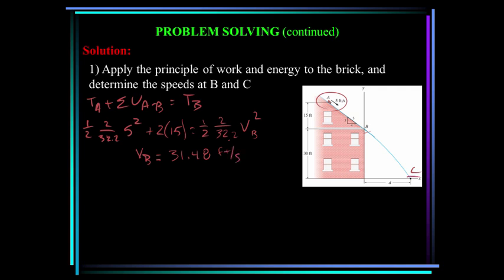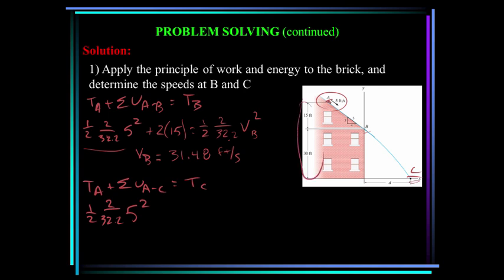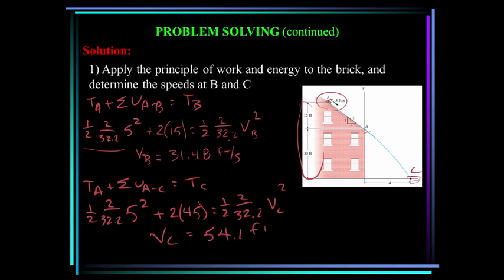To find the velocity at point C: kinetic energy at A plus the work done between A and C equals kinetic energy at C. The kinetic energy at A is again one-half times 2 over 32.2 times 5 squared. The work done between A and C is the 2-pound weight dropping a total of 45 feet — positive work, so 2 times 45. That equals one-half the mass times velocity at C squared. Solving for the velocity at C gives 54.1 feet per second.